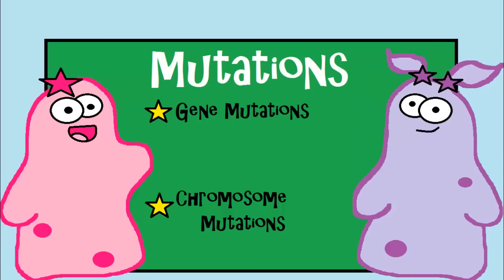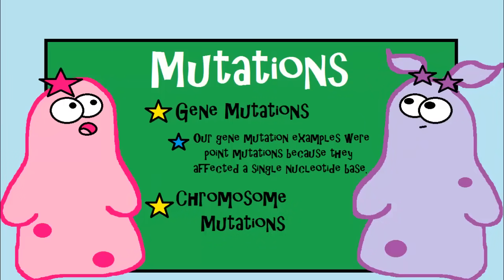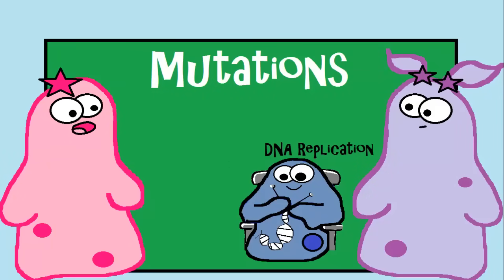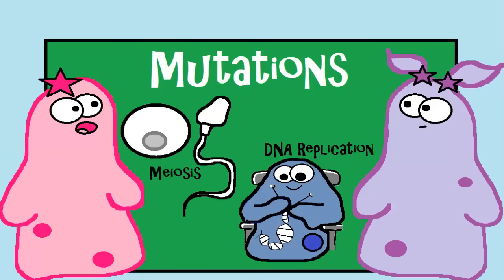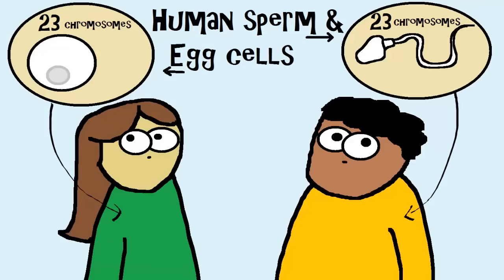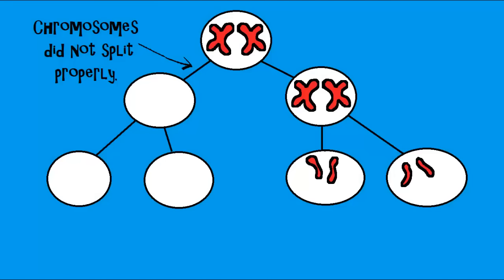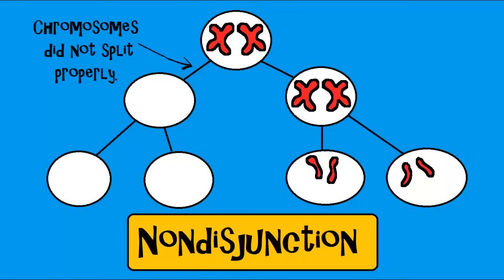There are more mutations than what we just covered, but the idea is there are many kinds of changes that can happen. There are also some vulnerable times — like when DNA replication happens during interphase, and also during meiosis. In humans, meiosis produces sperm and egg cells that have 23 chromosomes. But sometimes those chromosomes, when they're separating, don't separate completely. We call this non-disjunction.